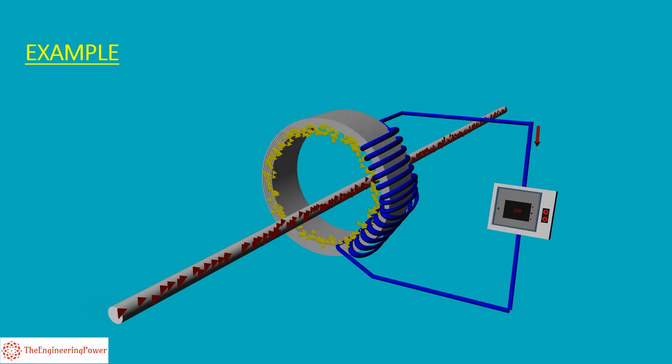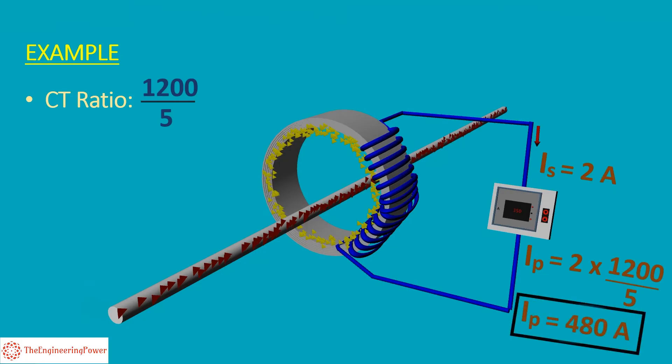For example, in a CT with a CT ratio of 1200 by 5, if the ammeter connected on the secondary side detects 2 Ampere current, it will automatically multiply it with the CT ratio of 1200 by 5 to give us the value of current in the primary winding. So the primary current will be 2 multiplied by 1200 by 5, that will be equal to 480 Ampere. So in this way, we can calculate the high currents with standard ammeters.